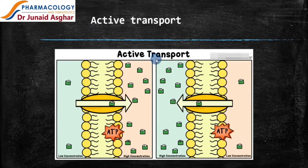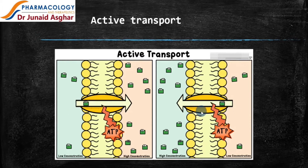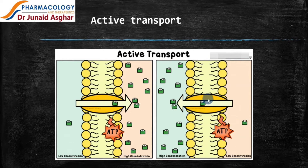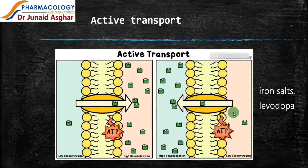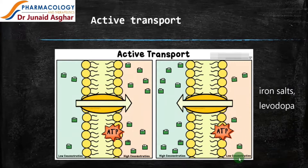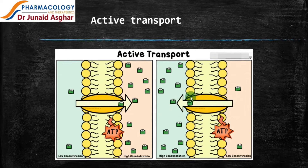Let's talk about active transport. In active transport, like facilitated diffusion, there is a carrier protein. But additionally, there is one ATP molecule, or energy, which drives the process even more efficiently. This ATP or energy is required to drive the drug molecules from a region of low concentration to the region of higher concentration, unlike facilitated diffusion.